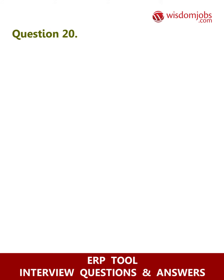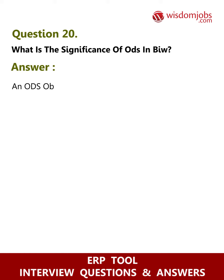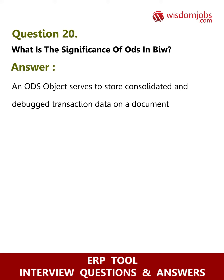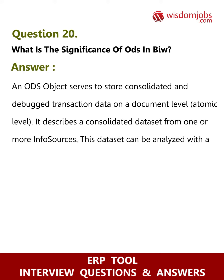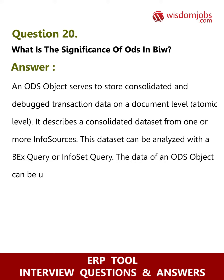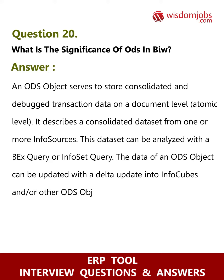Question 20: What is the significance of ODS in BIW? Answer: An ODS object serves to store consolidated and cleansed transaction data on a document level, or atomic level. It describes a consolidated data set from one or more info sources. This data set can be analyzed with a BEx query or InfoSet query. The data of an ODS object can be updated with a delta update into InfoCubes and/or other ODS objects in the same system or across systems.